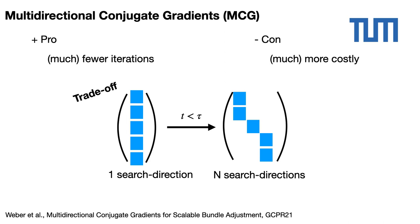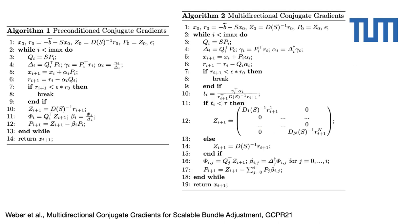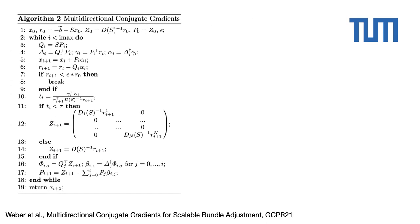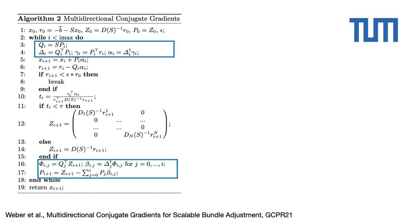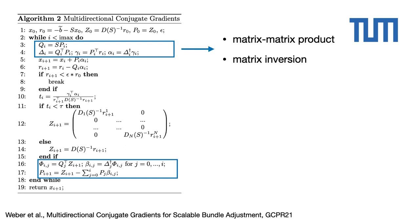A trade-off between convergence improvement and computational cost needs to be designed. Given a threshold TOW, a TOW test determines whether the algorithm sufficiently reduces the error, and in that case a step of PCG is performed, or not, and in that case the search space is enlarged. With respect to PCG, an adaptive step has to be designed. Moreover, three elements differ in our MCG algorithm: we consider matrix-matrix products, we need to invert the matrix delta which was a scalar in PCG, and a full reorthogonalization step is now necessary to avoid numerical error.